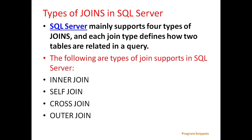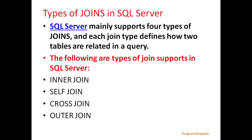SQL Server mainly supports four types of JOINs, and each JOIN type defines how two tables are related in a query. The different types are Inner JOIN, Self JOIN, Cross JOIN, and Outer JOIN.